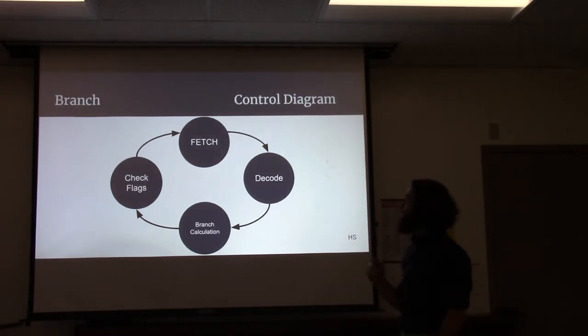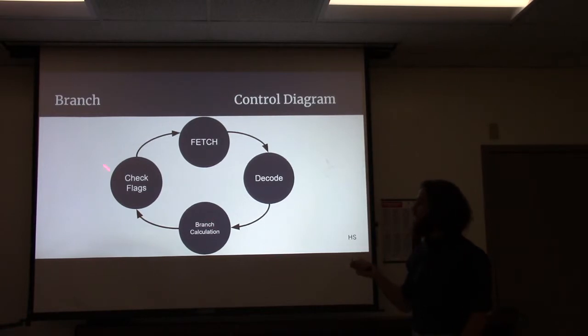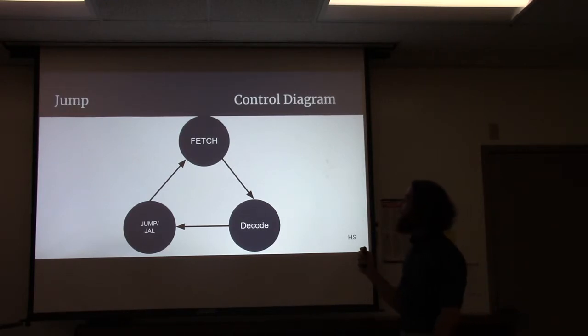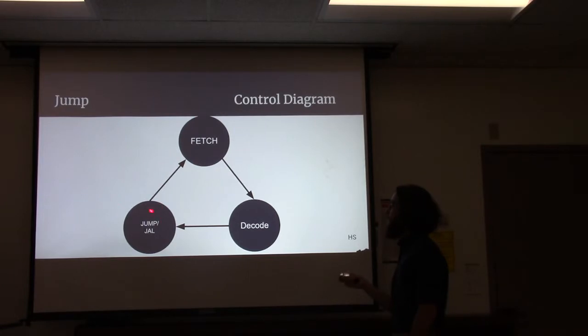For the branch instructions, we start off same thing, fetch, decode, and then we perform a branch calculation. And then we have to check the flags, and depending on what the status of the flags is, that will tell us if we're going to be branching or not. And then we have the jump instruction, so perform fetch, decode, and then we update the program counter and jump at that address.